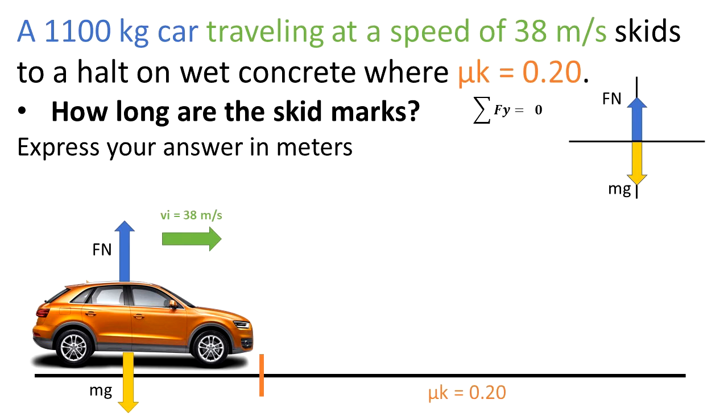We know from this picture that the summation of the forces in the y direction is equal to 0, because the forces are balanced. Normal force going up minus mg going down is equal to 0. We can conclude that FN is equal to mg.